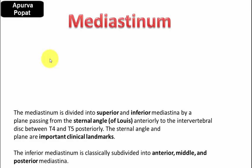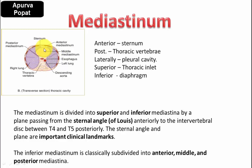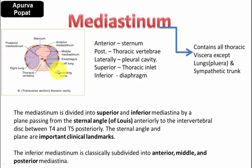In this video we'll be talking about the mediastinum. The dark shadow you see on the X-ray is actually the mediastinum. Looking at the cross section of the thoracic cavity, it is bounded laterally by the lungs and their pleura. The center is called the mediastinum, which is bounded anteriorly by the sternum, posteriorly by the thoracic vertebrae, laterally by the lungs and pleural cavity, superiorly by the thoracic inlet, and inferiorly by the diaphragm. The mediastinum contains everything except the lungs, their pleura, and the sympathetic trunk.